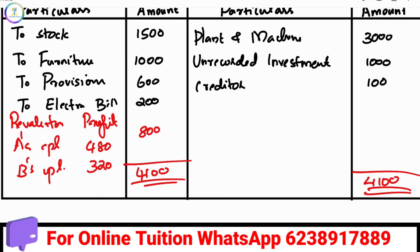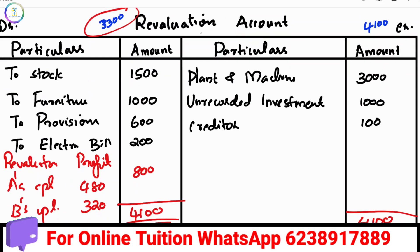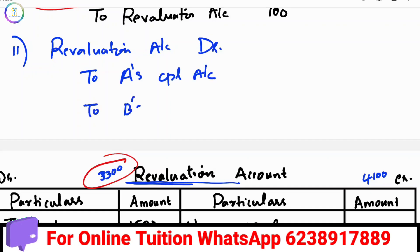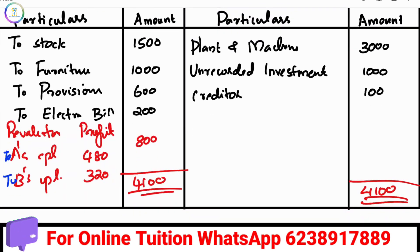That is the Revaluation Profit. Revaluation account debtor to A's Capital to B's Capital. We are going to complete the entries. Revaluation account debtor to A's Capital Account, to B's Capital Account. If you have a partner's capital account question, please comment. I hope you enjoyed this video. Thank you.